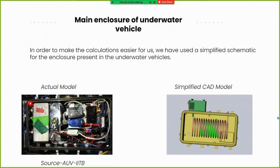To make calculations easier, we used a simplified schematic for the enclosure. This contains three major components: the pump outside the box, which controls inflow and outflow of seawater used as a coolant; the coiled pipe, which increases surface area for convection; and the CPU and GPU along with the motherboard, indicated by the light green box below the pipe. The left side shows the actual Matsya enclosure — quite complex — so we simplified it into a CAD model.